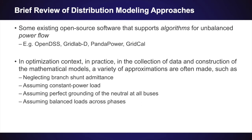That covers the requirements we need for an optimization-first approach, but what software exists today that covers distribution modeling? There are some very nice full-featured open-source software packages that currently exist for distribution network analysis, but they have a focus on unbalanced power flow algorithms instead of fulfilling the need for an optimization experimental platform. In terms of the recent state of distribution optimization, in practice, a variety of approximations are often made, such as neglecting branch shunt admittance, assuming constant power load models, assuming perfect grounding of the neutral at all buses, or even assuming balanced loads across all phases. And these things are really inadequate for accurately representing distribution systems.